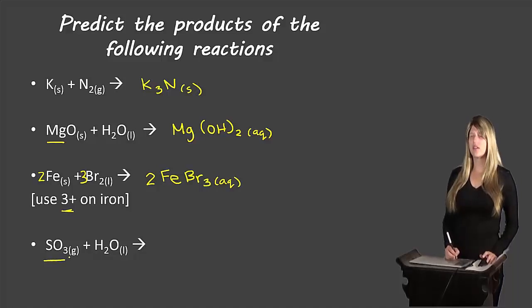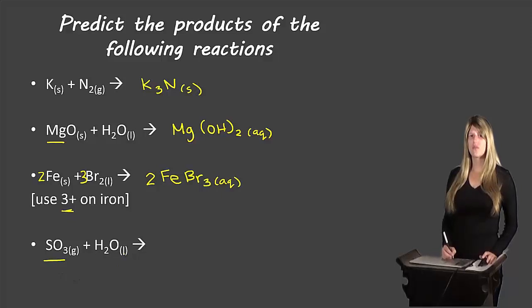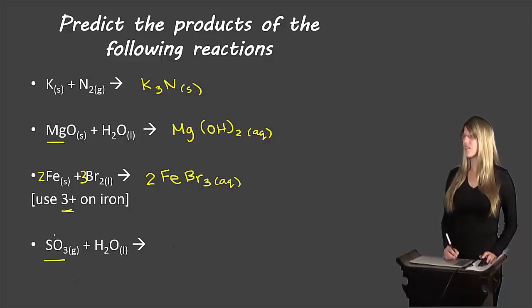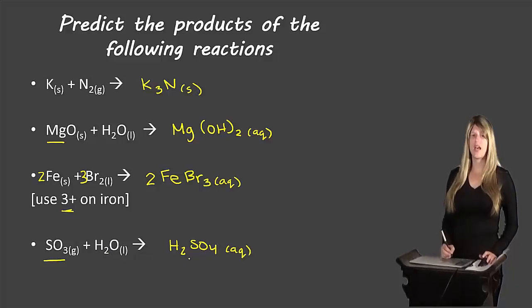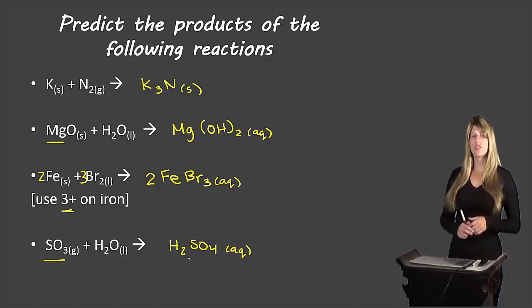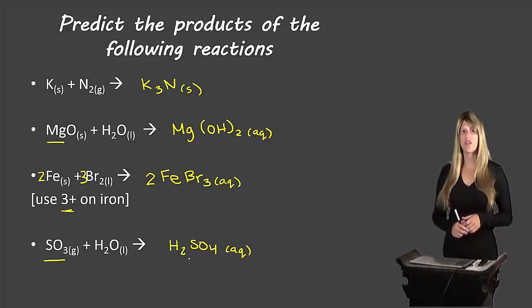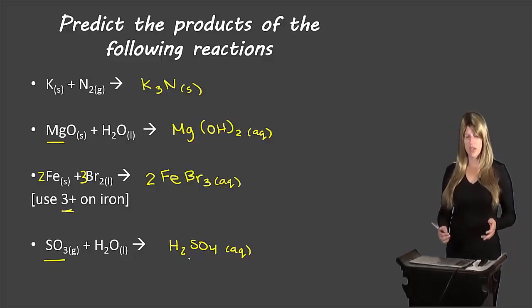For our last example, we have a non-metal oxide reacting with water. Non-metal oxides react with water to produce acids. The acid produced from sulfur trioxide (SO3) is H2SO4, and if we look here, this equation is actually balanced as written.